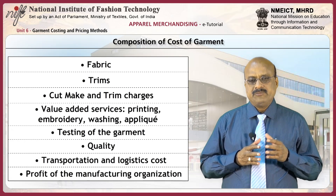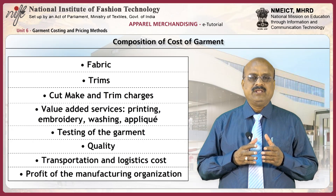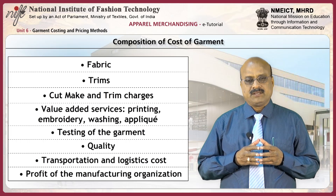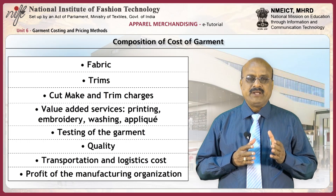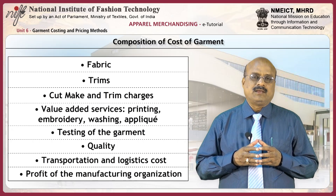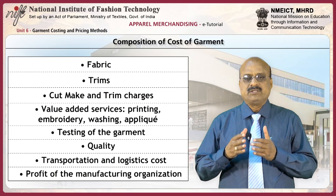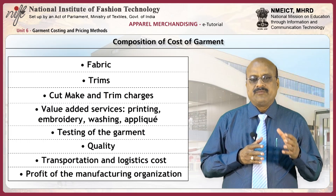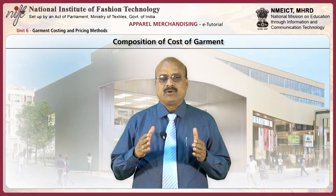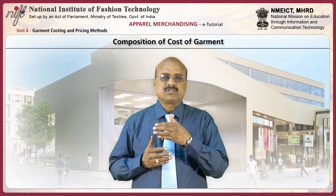The cost of a garment depends on these components: fabric, trims, cut, make, trim charges — known as CMT, and sometimes as CMTP (cut, make, trim and pack). Value added services like printing, embroidery, washing, applique, and testing of the garment, quality, transportation and logistics cost, and profit of the manufacturing organization. All these components of garment cost depend upon certain parameters which drastically affect the above cost parameters.